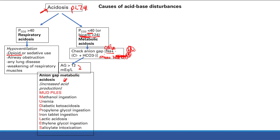For example, lactic acidosis: lactic acid production gives you H+ plus lactate−. The H+ reacts with bicarb, so bicarb goes down and H+ goes away. Now you have decreased bicarb — so the anion gap goes up, there's a bigger difference between sodium and the chloride plus bicarb. The negative charge from bicarb was replaced by the lactate. That's the same idea for all the anion gap causes.